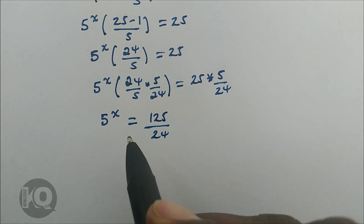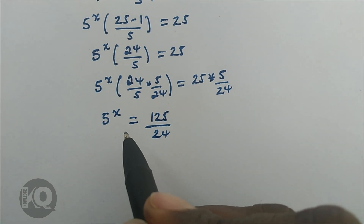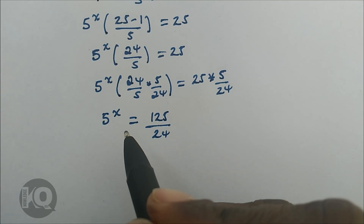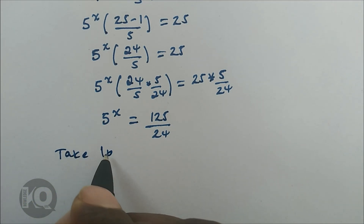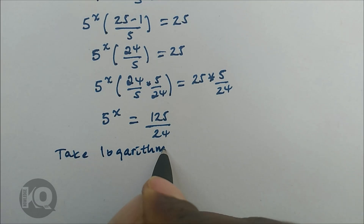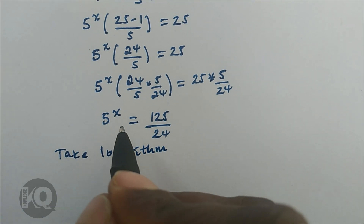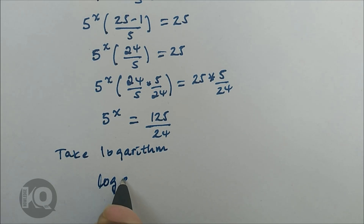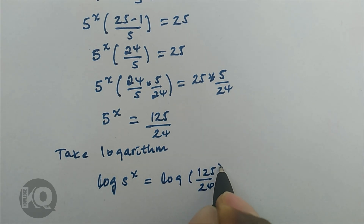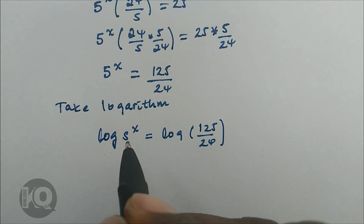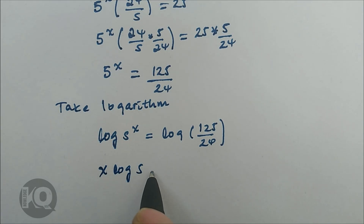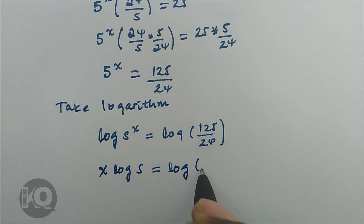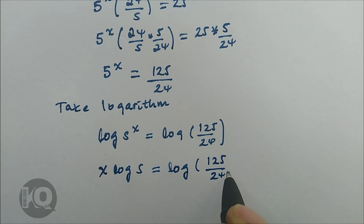Since this is an exponential equation, we solve it by introducing logarithms. Taking logarithm on both sides: log of 5 to the power of x equals log of 125 divided by 24. Bringing the power down: x times log of 5 equals log of 125 over 24.